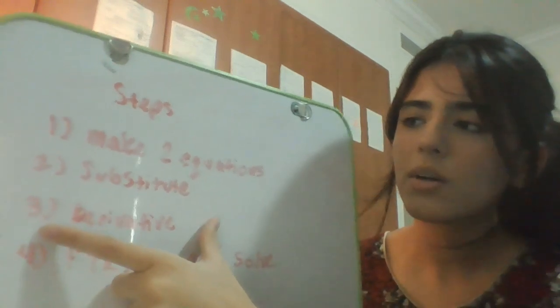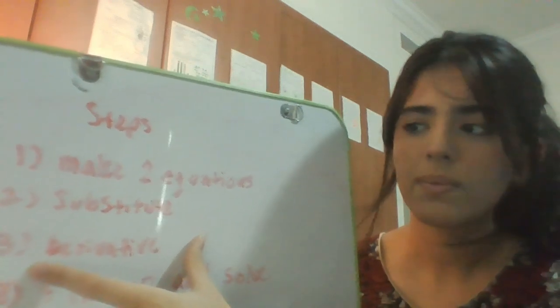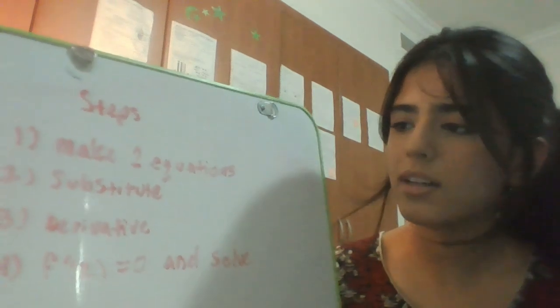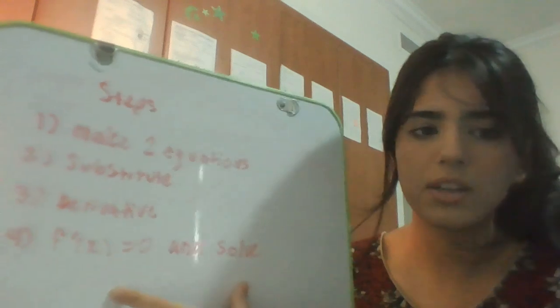Okay, and then after when you substitute it, you take the derivative of the function. You substituted it already and that's when you'll take the derivative after. And in step four, you just make the derivative equal to zero and you solve for your whatever variable.